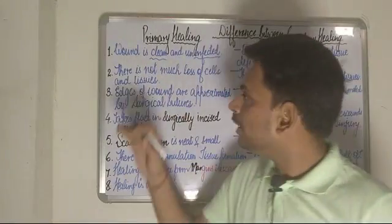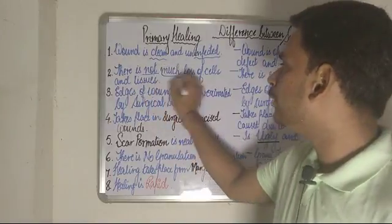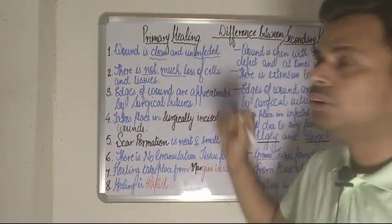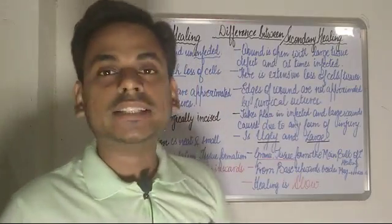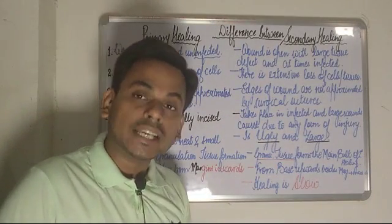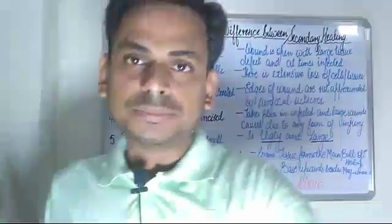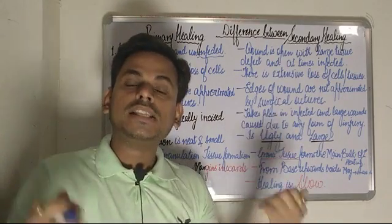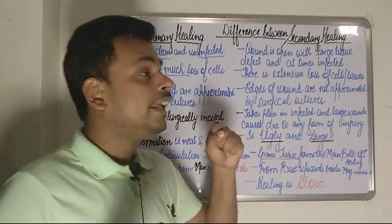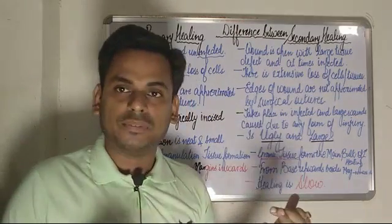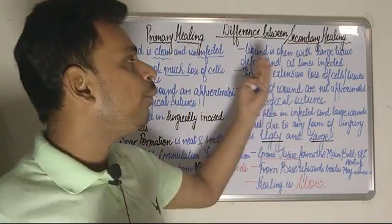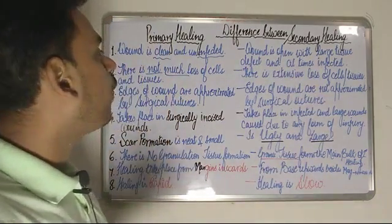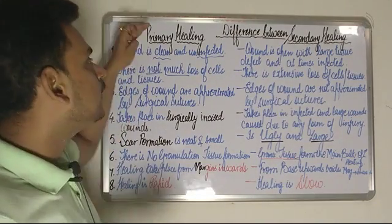In primary healing, there is not much loss of cells and tissues. In contrast, secondary healing involves extensive loss of cells and tissues, as it occurs when injury is at a very extensive level, causing significant cellular and tissue destruction.